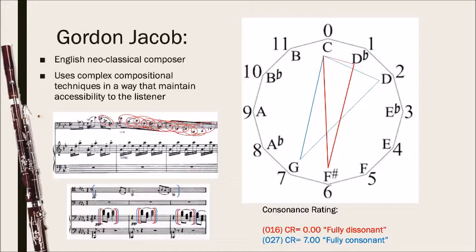Gordon Jacob's music, I found, has two major sets that kept recurring: the 0-1-6 set, shown in red, and the 0-2-7 set, shown in blue.